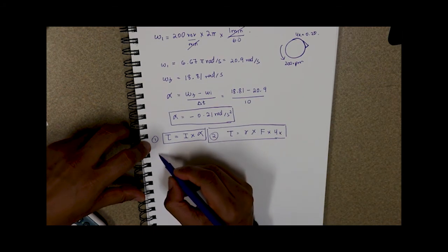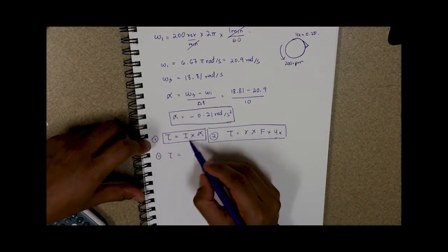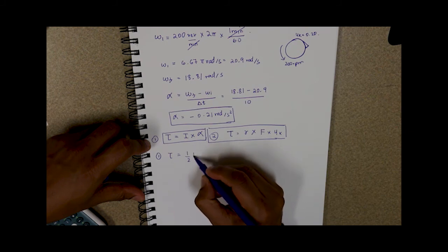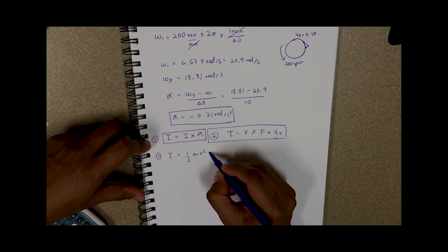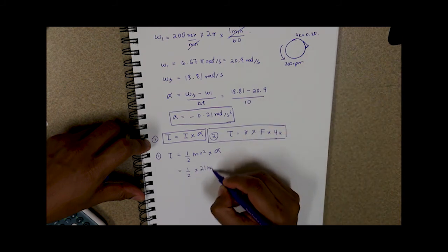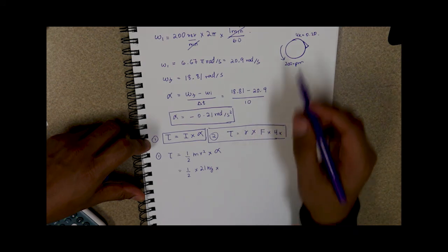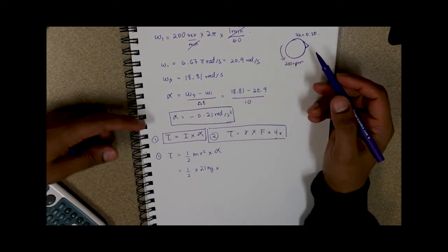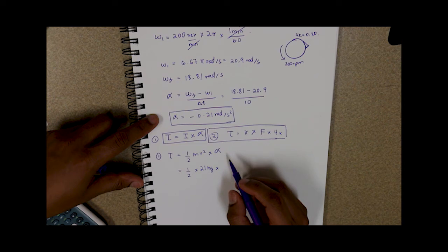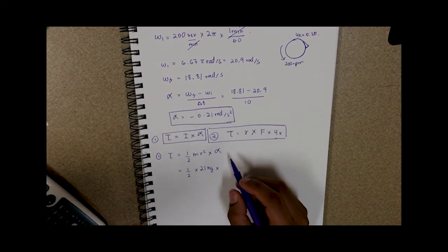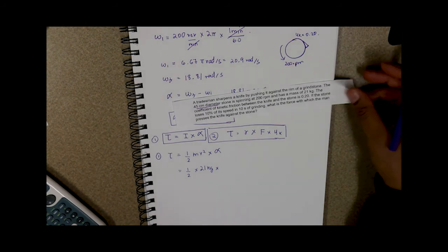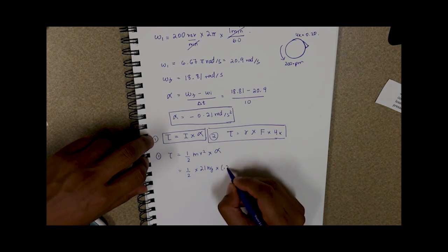So first we'll use our first torque formula and our moment of inertia in this case for a grinding wheel that's solid will be half the mass of the wheel times the radius squared times angular acceleration that we found out. So let's find this value out here. We know our mass of the wheel is 21 kilograms given to us in the question and our diameter was given to us as 45 centimeters so our radius would be 22.5 centimeters, and our radius in meters would be 0.225 meters.